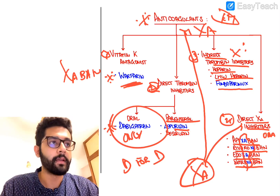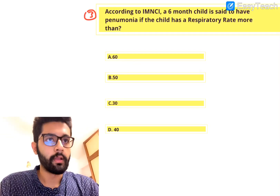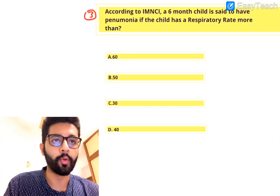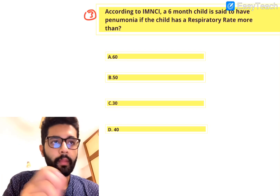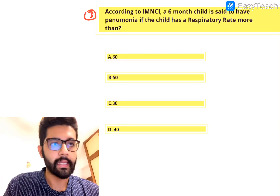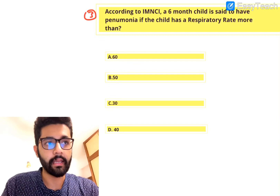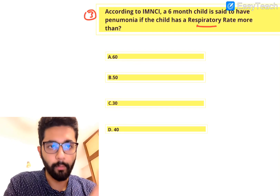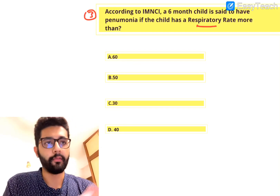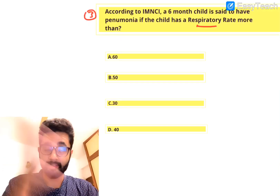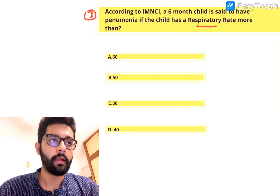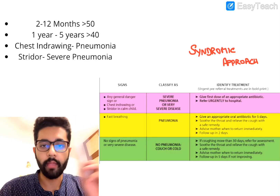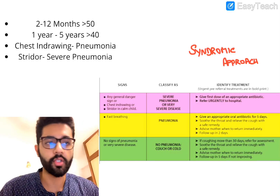Question number three is from pediatrics. According to IMNCI, a six-month-old child is said to have pneumonia if the child has a respiratory rate of more than — A. 60, B. 50, C. 30, or D. 40. Pause, think, and then we'll discuss. Before we discuss in detail, let's talk about IMNCI and its classification.